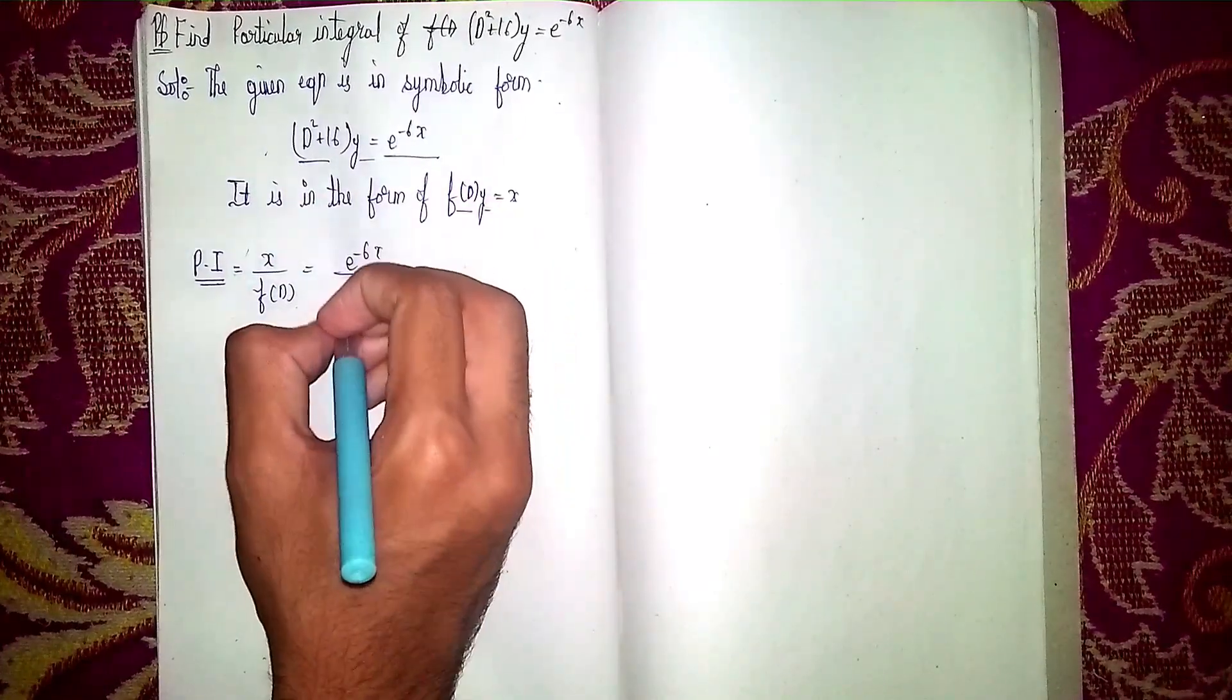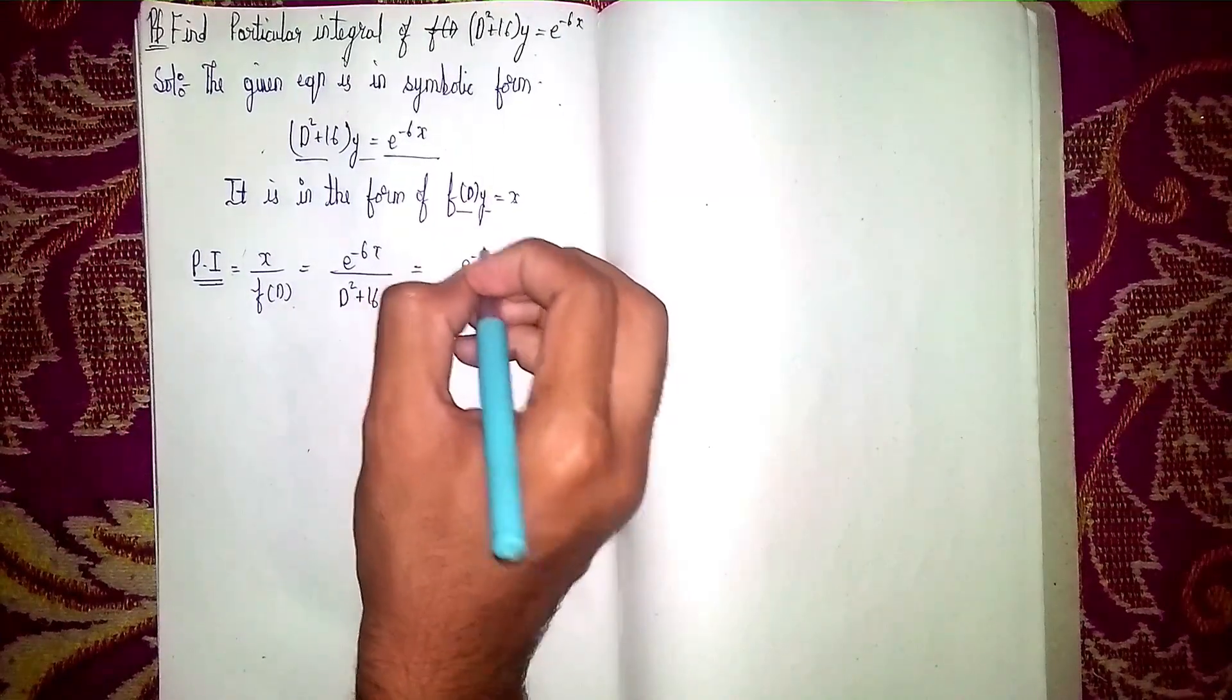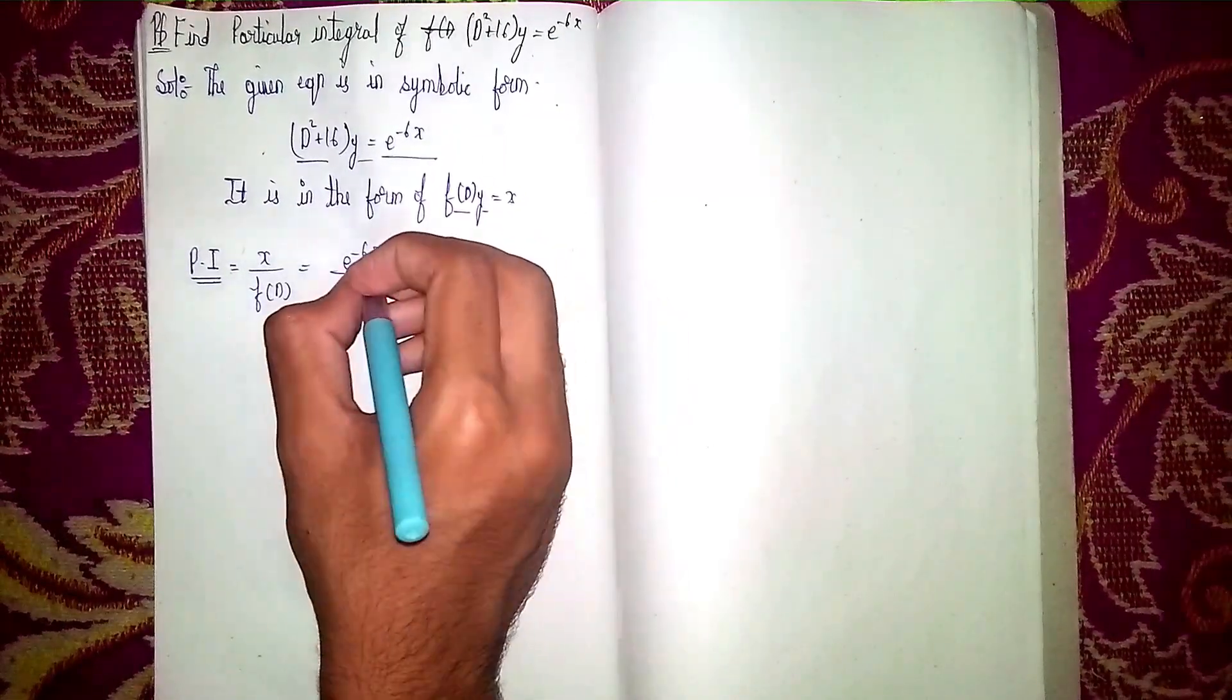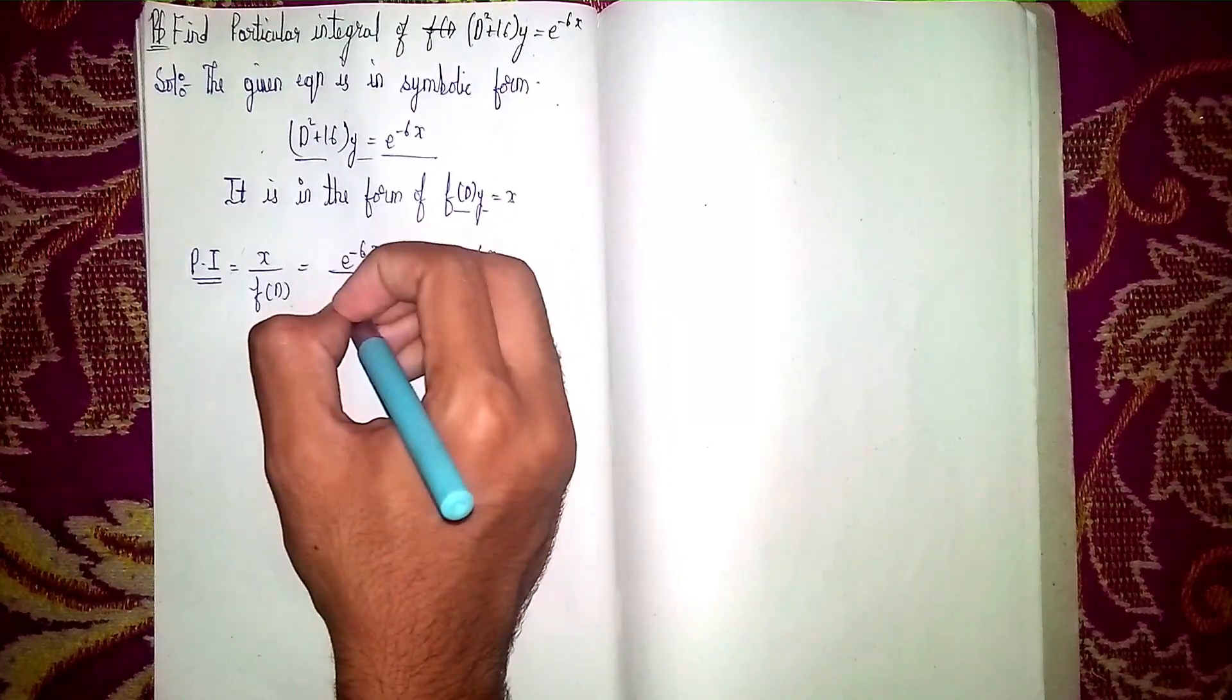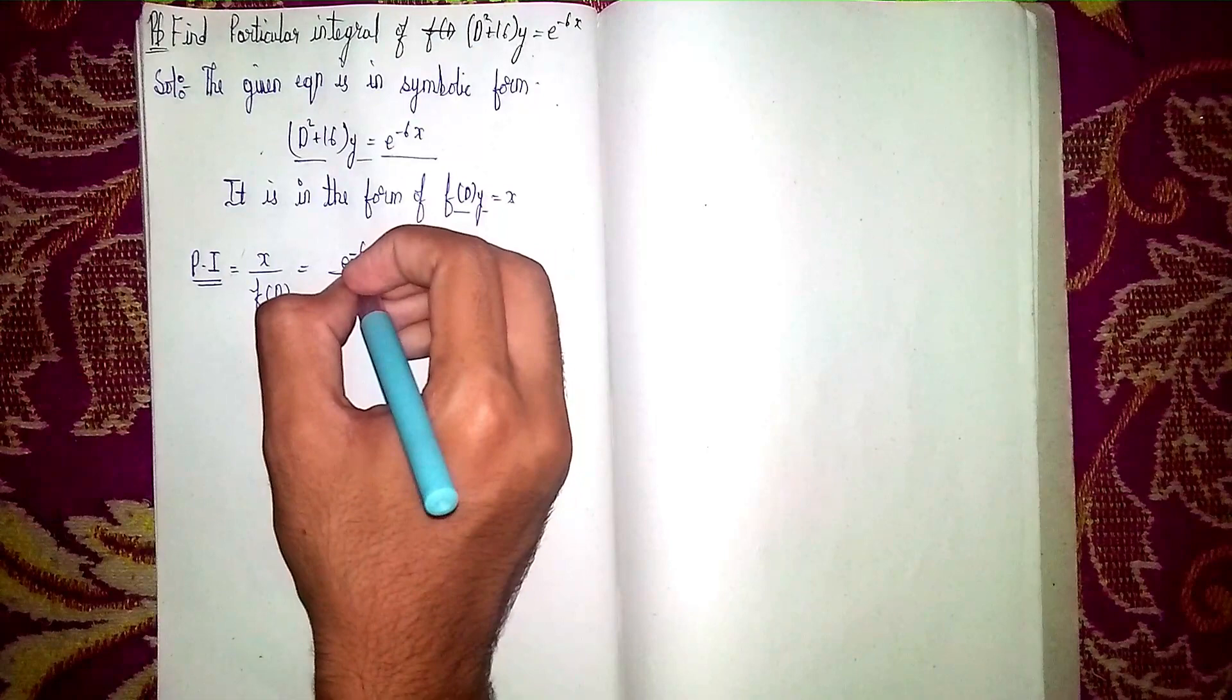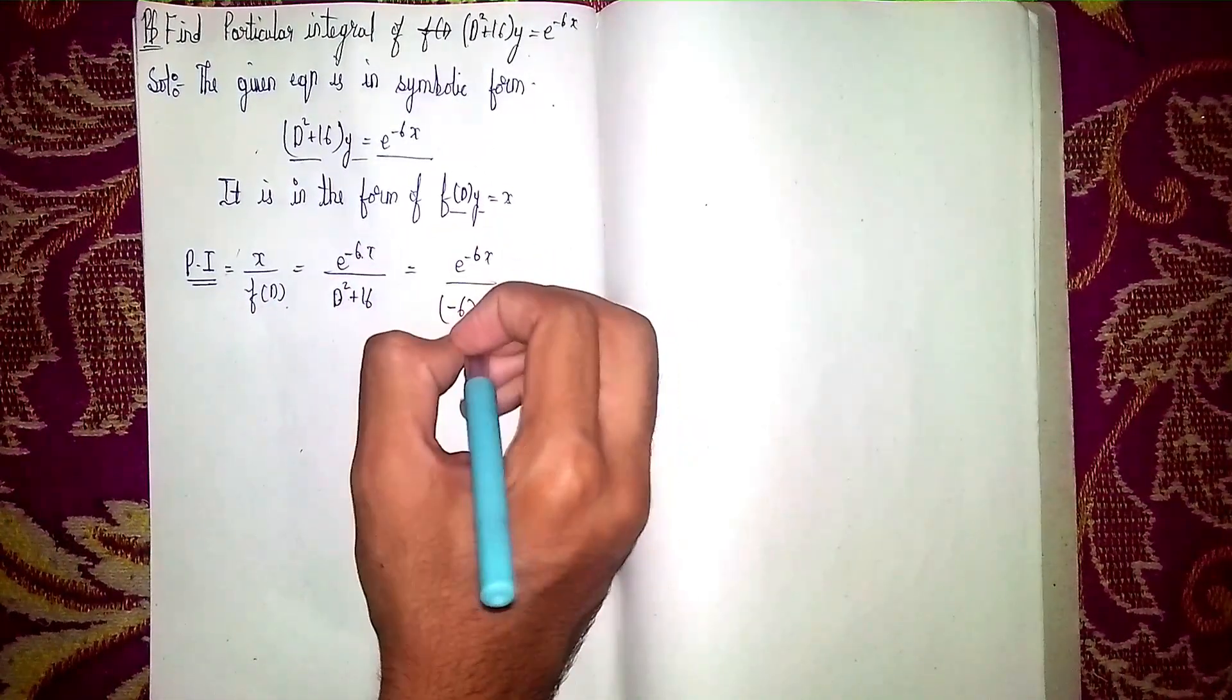Okay, after that, e^(-6...)... Instead of D, you have to substitute -6 here. Whatever number is there, you have to substitute and check the sign. If positive, substitute positive; if negative sign is given, substitute negative. There you go: (-6)² + 16.